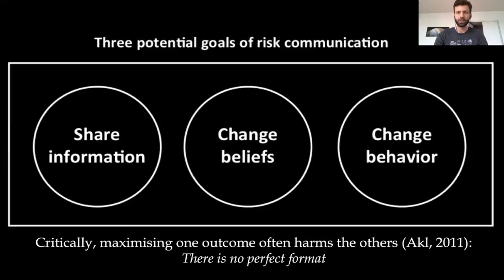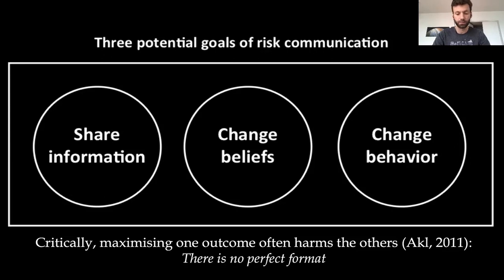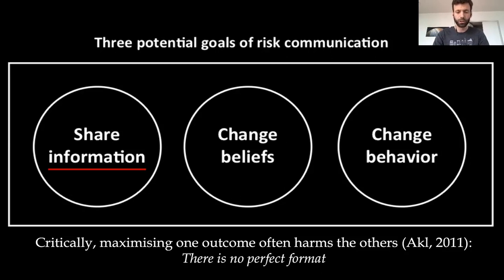Broadly speaking, there are three overarching goals you might have when communicating about harms and benefits — whether to politicians, policymakers, or the general public. Those goals are: to share information, to change someone's beliefs, or to change their behaviors. The key is to recognize that the kinds of messages most effective for one goal are not equally effective for all goals.